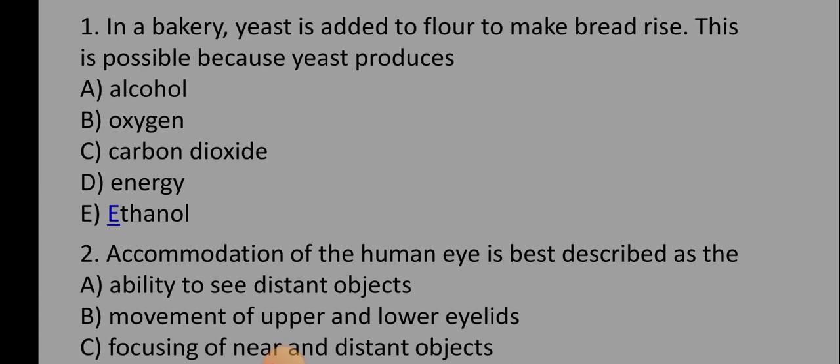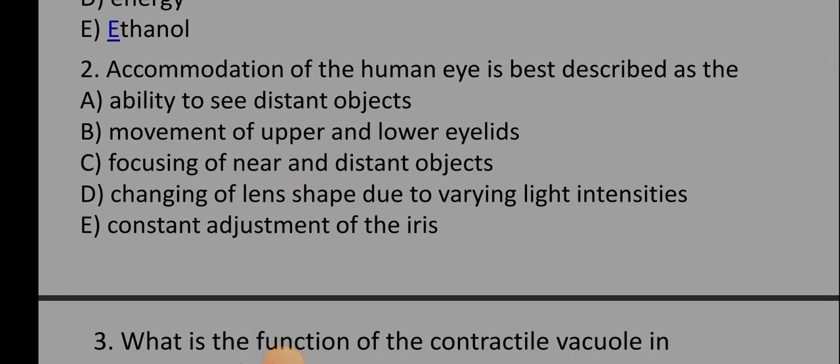The next question says, accommodation of the human eye is best described as: A) ability to see a distant object, B) movement of upper and lower eyelids, C) focusing of near and distant objects, D) changing of lens shape due to varying light intensities, E) constant adjustments of the iris. The correct option is option C, which is focusing of near and distant objects. This very question came out during this year's JAMB UTME examination, so it is important for you to pay attention to this.